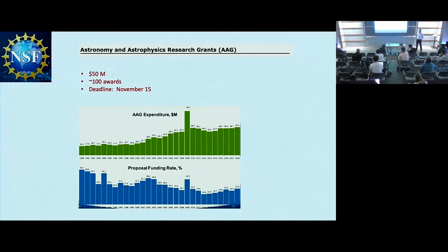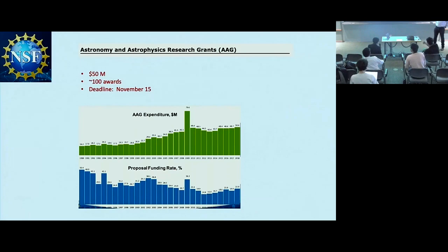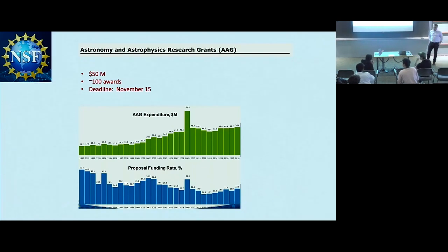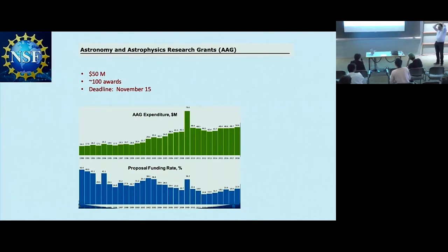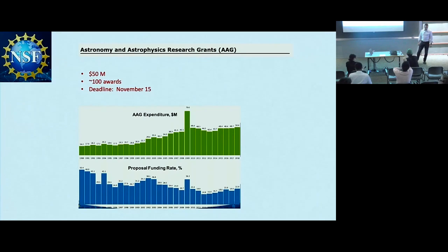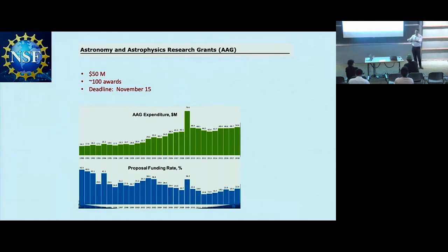Q: For the AI Institutes, what happens after five years? A: There's no plan for sustainability — the money ends after five years. It's possible you could apply for renewal, but that discussion hasn't happened yet. This is a problem with a lot of programs — they have an end.